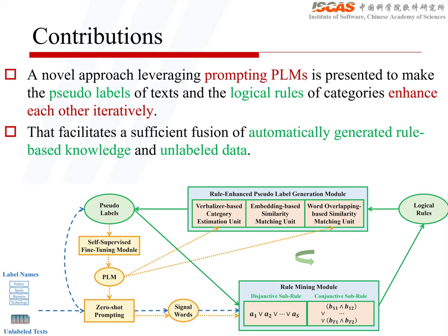A novel approach leveraging prompting PLMs is presented to make the pseudo-labels of text and the logical rules of categories enhance each other iteratively. There are three key modules that make up the iteration: a rule mining module, a rule-enhanced pseudo-label generation module, and a self-supervised fine-tuning module that facilitate sufficient fusion of automatically generated rule-based knowledge and unlabeled data.